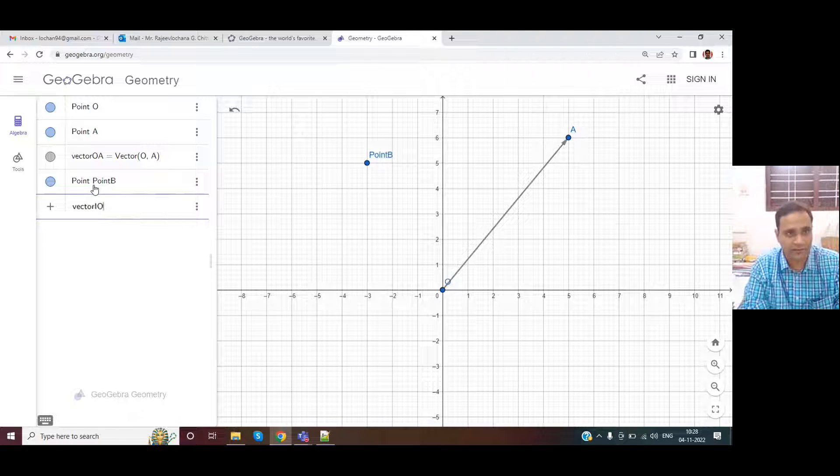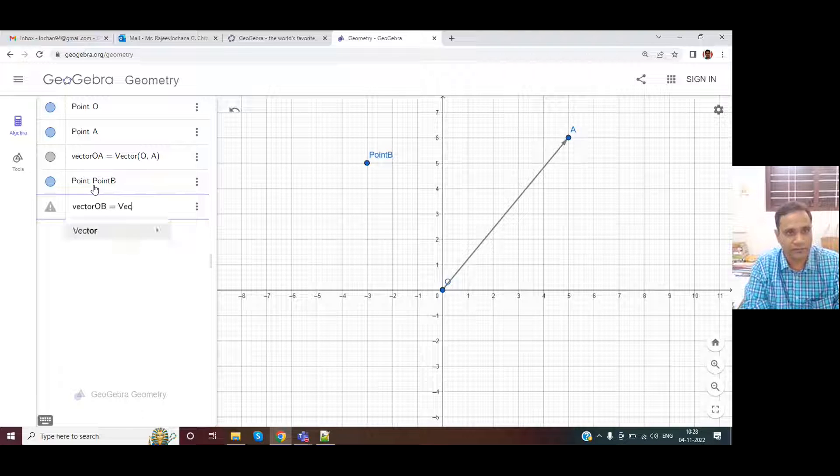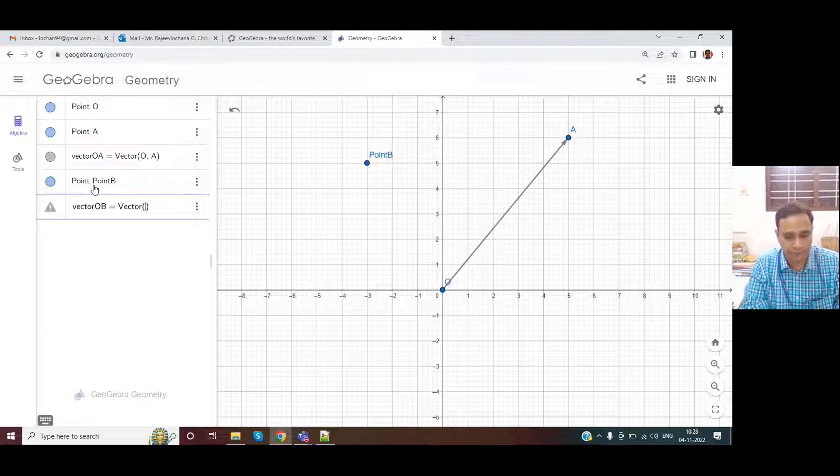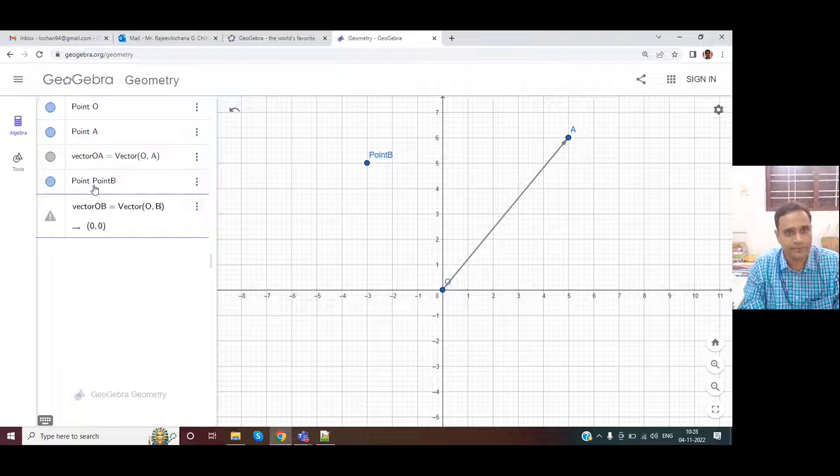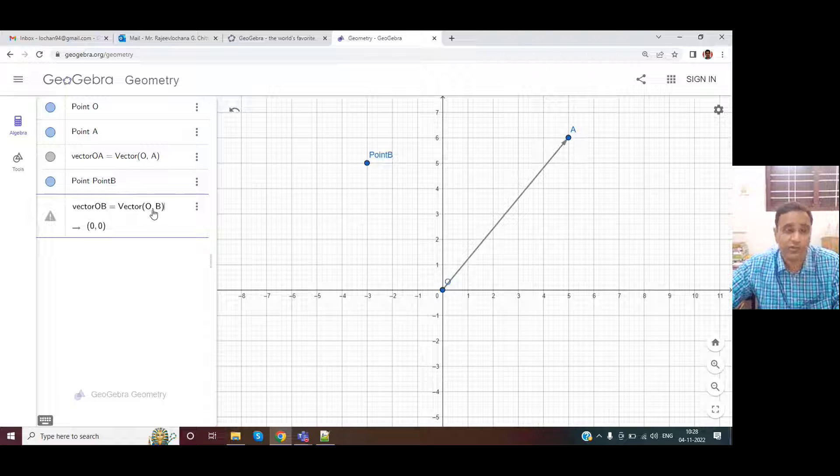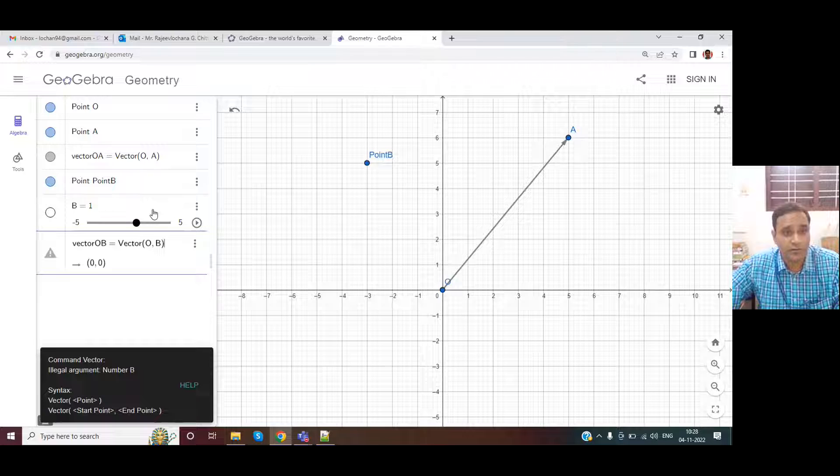Now we want another vector OB is equal to vector between O and B. Please remember sometimes students make a mistake of typing 0 here. Then there will be few errors or result is not shown. Okay, yeah, there's some problem here. What is it?